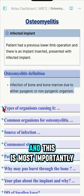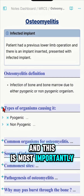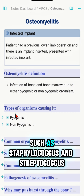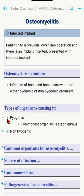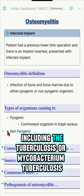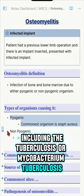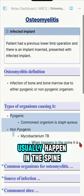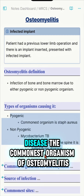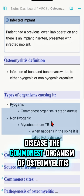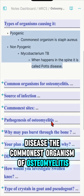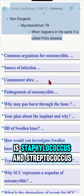Pyogenic organisms include most importantly Staphylococcus aureus and Streptococcus. Non-pyogenic organisms include Mycobacterium tuberculosis, which usually occurs in the spine in a condition called Pott's disease. The commonest organism of osteomyelitis is Staph aureus and Streptococcus.